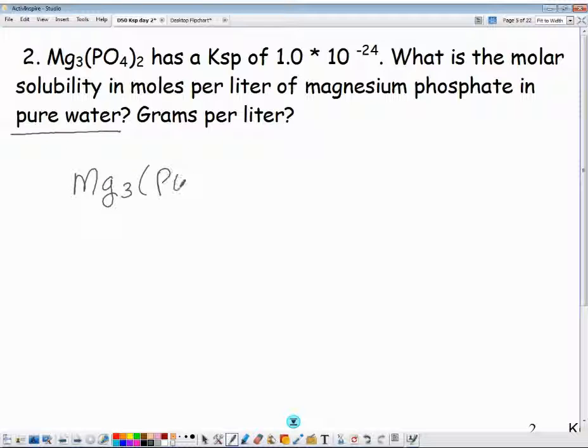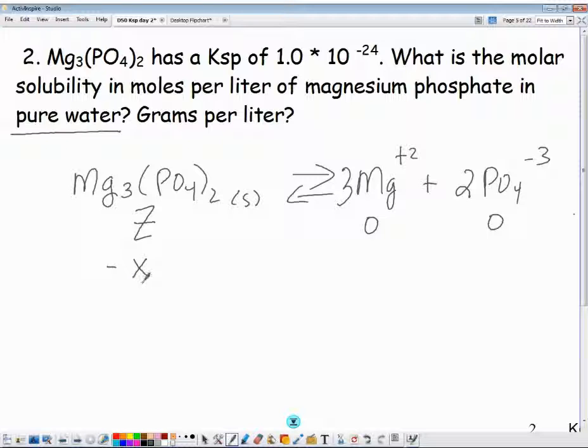So Mg3(PO4)2 solid. I need to know my polyions, because what if I didn't give you the formula and just gave you the name? Mg+2 and PO4-3 with a 2 coefficient and a 3 coefficient. That's what I mean by not a 1 to 1 mole ratio. Now we've got to incorporate our coefficients in our X's. Pure water means no ions floating around. So I put zeros. We just say at some value Z, minus X is the molar solubility that does dissolve, that does fall through the cracks. So 3X is the amount of magnesium ion created, and plus 2X is the amount of phosphate made.